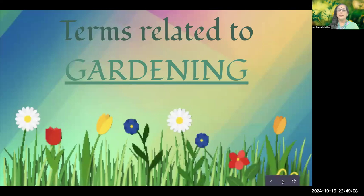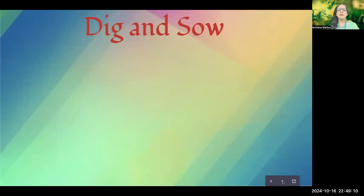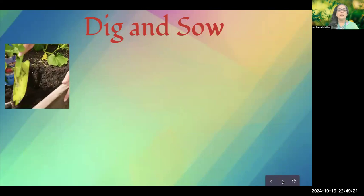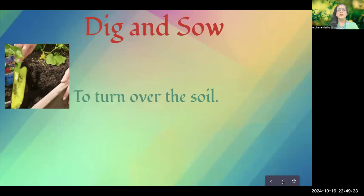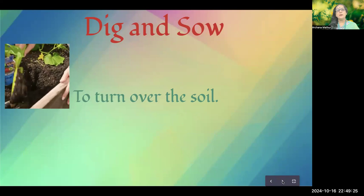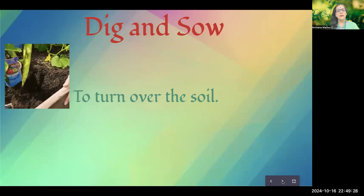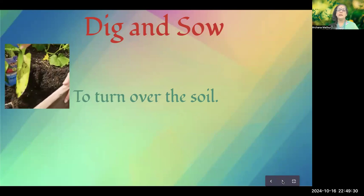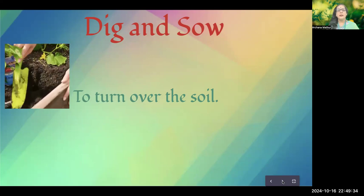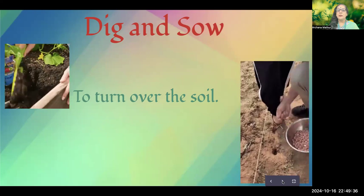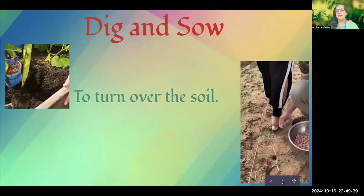The first term is dig and sow. Whenever we have to plant any plant, seedling, or seed, we have to dig. Digging is basically turning over the soil to make it loose so that oxygen or air can move in and help the seeds to germinate. Sowing is putting the seed into the soil.